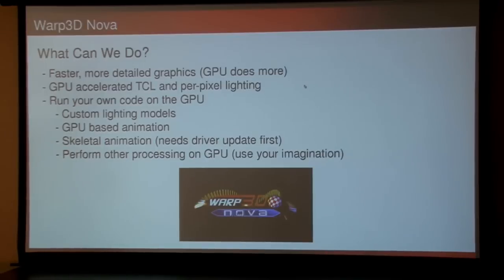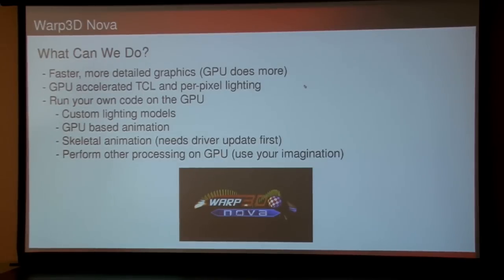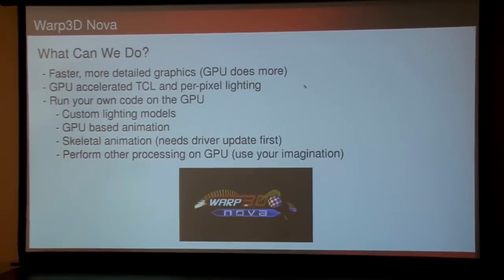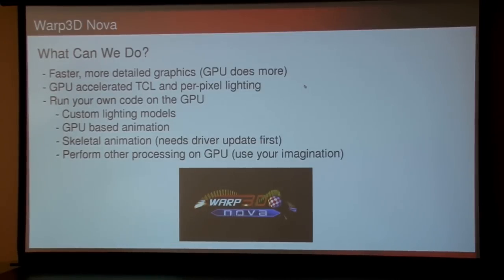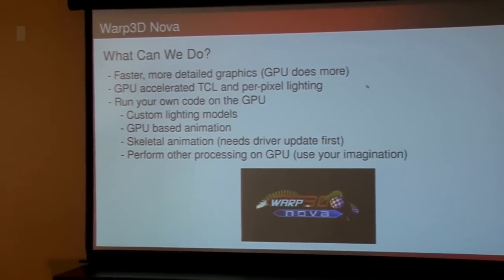So what can we do with Warp 3D Nova? First thing is faster, more detailed graphics, because you've got the GPU doing more. The GPU does more, the CPU's got more time for other things. We've finally got GPU accelerated TCL, and you can do more than that — per-pixel lighting as well. And because you can run your own code on the GPU, you can make up your own lighting models, do animation on the GPU even, and even perform non-graphics processing if you can come up with algorithms that work within the graphics framework.